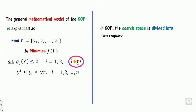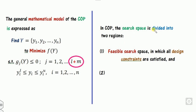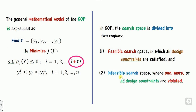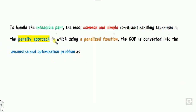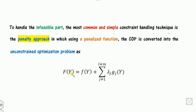Once writing these constraints, your task is to find y that satisfies them. However, some points in the searching space may not satisfy all constraints. The search space divides into two regions: the feasible space, where all constraints are satisfied, and the infeasible space, where one or more constraints are violated. If a solution is infeasible, we use the penalty approach to convert the constraint optimization problem into an unconstrained optimization problem.